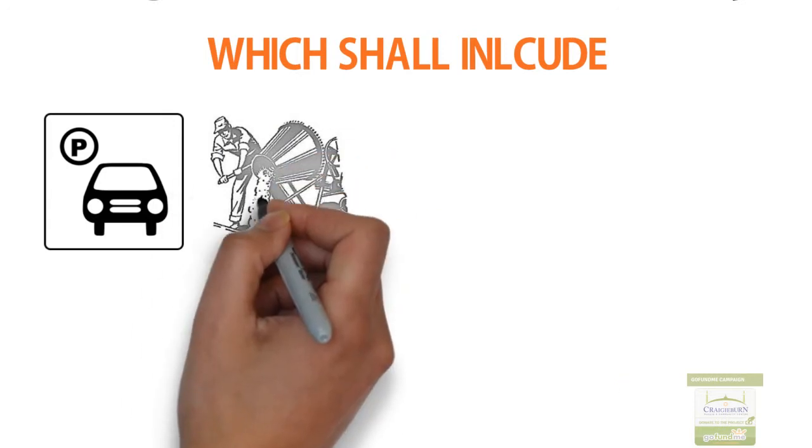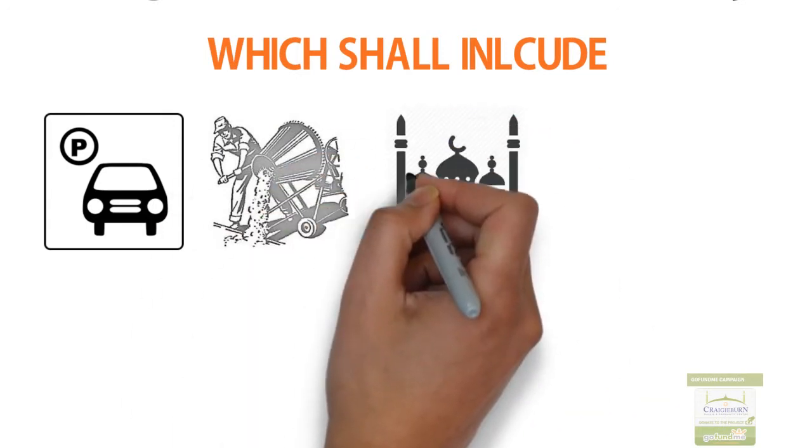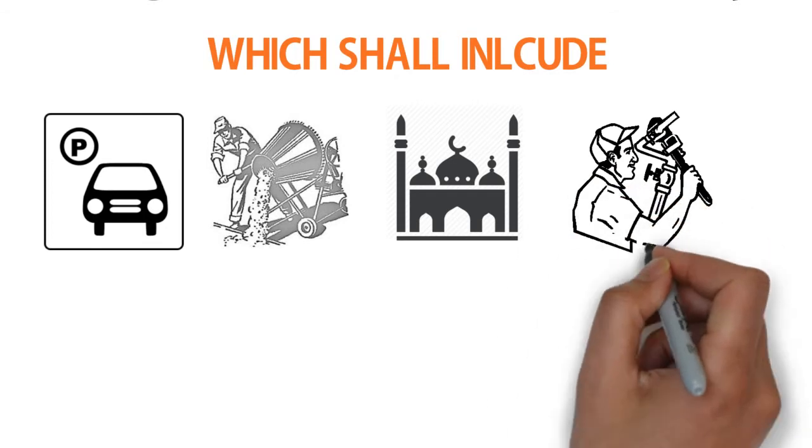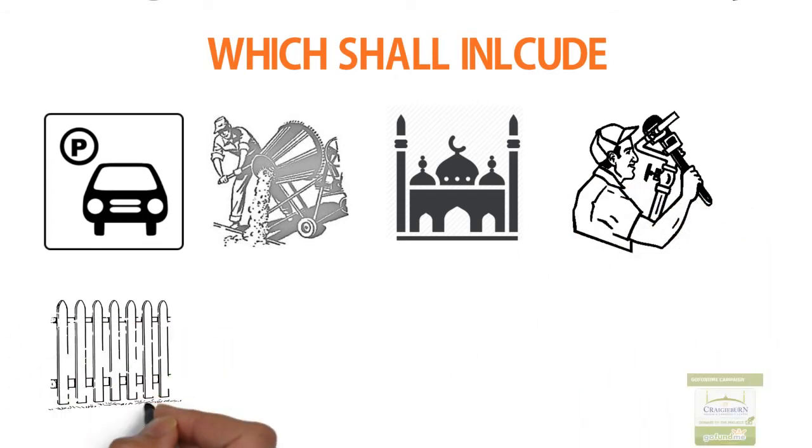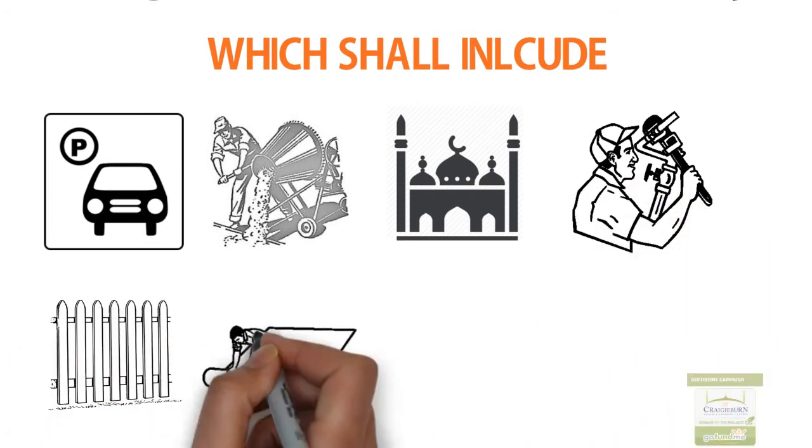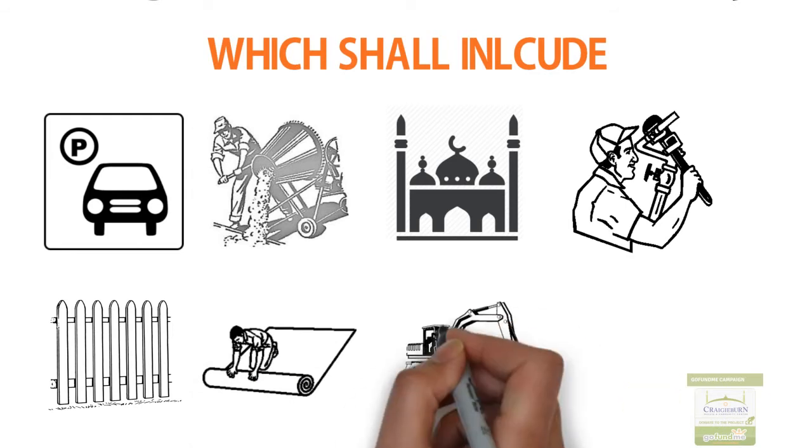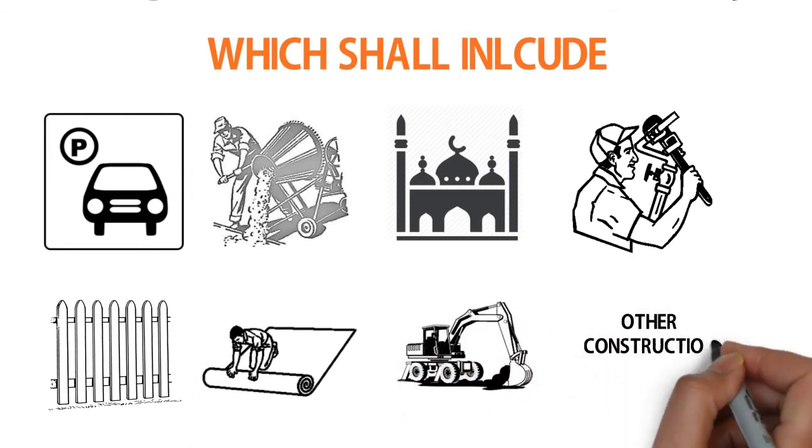concrete flooring and pavement, a 700 square meter prayer area, plumbing and electrical works, secure gate and fencing, carpets and furnishings, excavation, leveling, and other construction expenses.